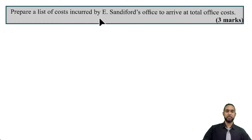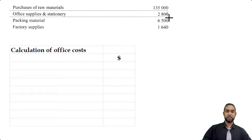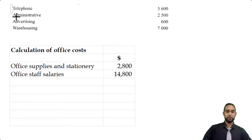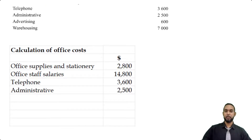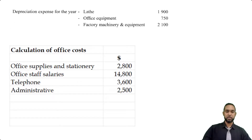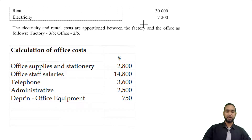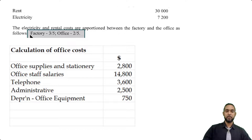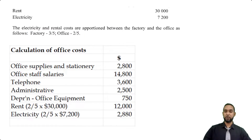Part B asks us to prepare a list of costs incurred by E. Sandiford's office to arrive at total office costs. From the trial balance: office supplies and stationery $2,800, office staff salaries $14,800, telephone, admin, and depreciation on office equipment of $750. Then the two-fifths share of rent and electricity goes here, since three-fifths went to the manufacturing account. Totaling these up gives total office costs of $39,330.